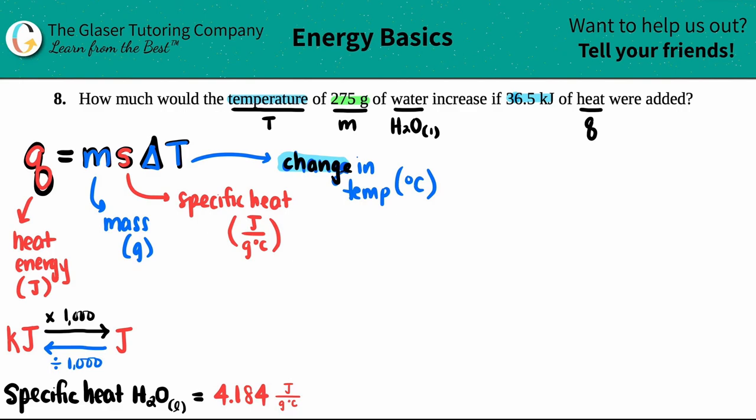So let's see, do we know a Q? Well, yeah, they said 36.5 kilojoules of heat. So the Q is this value.